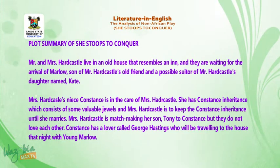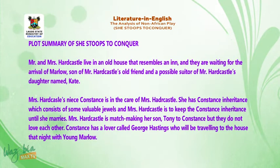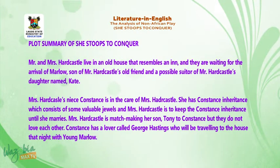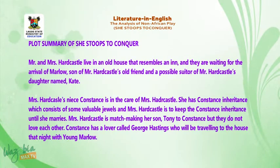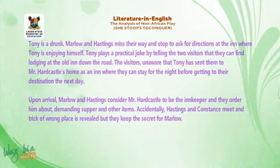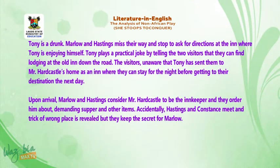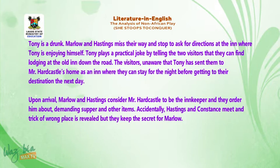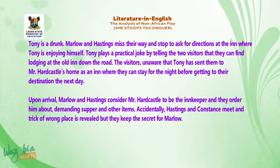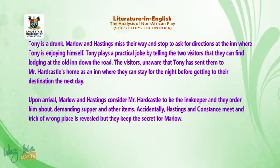Mrs. Hardcastle is to keep Constance's inheritance until she marries. Mrs. Hardcastle is matchmaking her son Tony to Constance, but they do not love each other. Constance has a lover called George Hastings, who will be travelling to the house that night with young Marlowe. Tony is a drunk. Marlowe and Hastings miss their way and stop to ask for directions at the inn where Tony is enjoying himself.